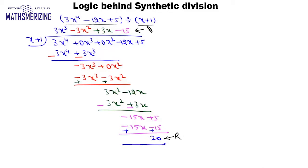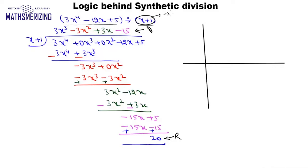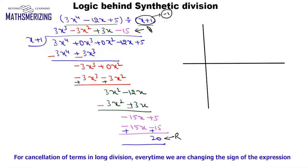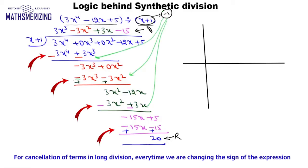Now we will use synthetic division, so I will draw the lines. The first question that comes to mind is: for x plus 1, why do we actually take minus 1 and not plus 1? If we go back to our long division, we can see that every time we are multiplying the factors we are changing the sign. So for plus 1 we take minus 1.